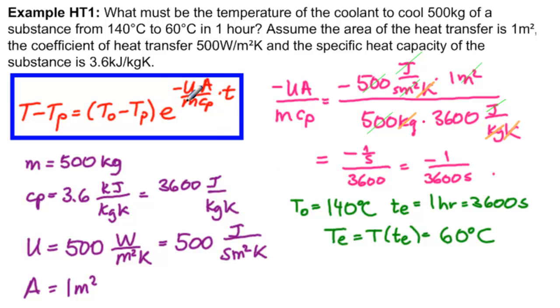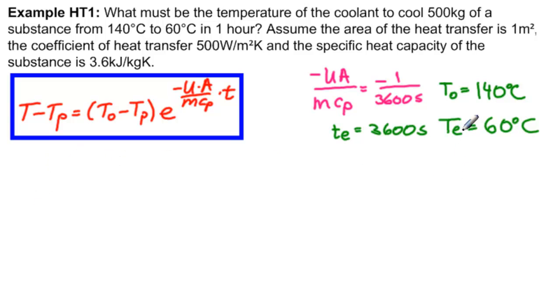We have a number to substitute. T is going to be te, 3600 here. That gives us our 60 degrees over here. And we know that T0 is 140, and we can solve for TP. Let's go for it. We're substituting for time te. So we have 60 degrees Celsius minus TP equals 140 degrees Celsius minus TP times e to the minus 1 over 3600 seconds times 3600 seconds. How convenient.